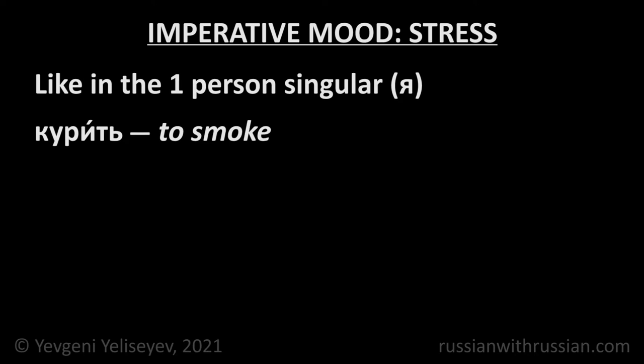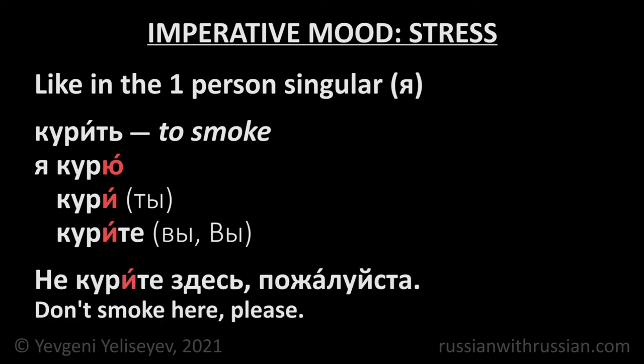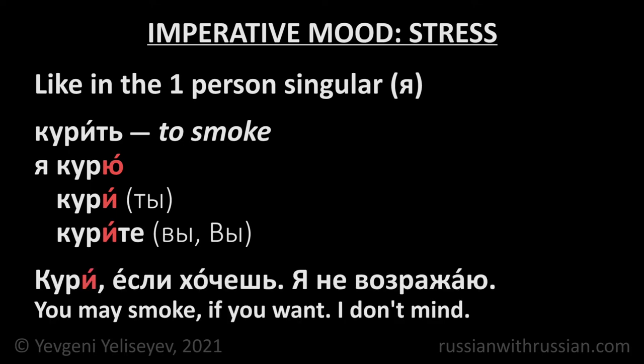Курить — To smoke. Я курю — the form Курю is stressed on the ending. That's why the imperative forms are stressed on the ending too, and the stressed imperative ending is always И: Кури, Курите. Не курите здесь, пожалуйста — Don't smoke here, please. Кури если хочешь, я не возражаю — You may smoke if you want, I don't mind.